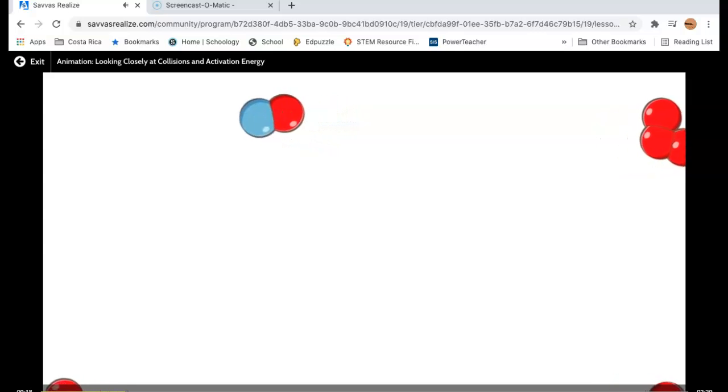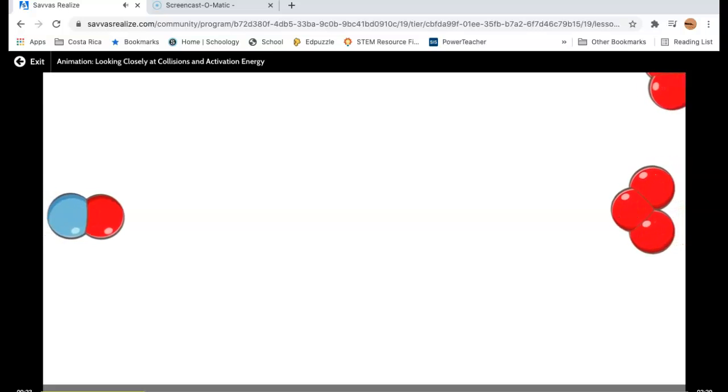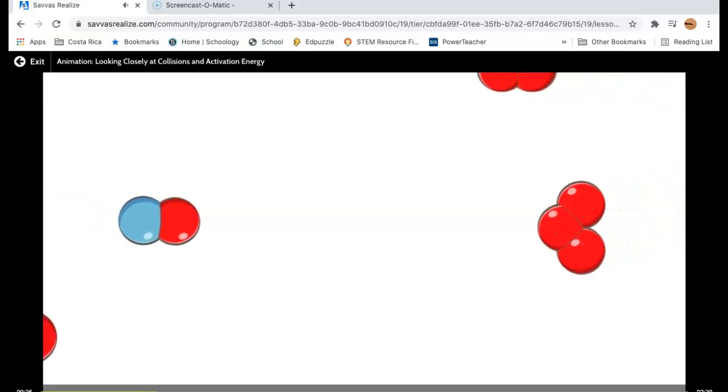Chemical reactions frequently require the formation of one or more new chemical bonds, which means that the two atoms forming a new bond must be close to each other during the collision.